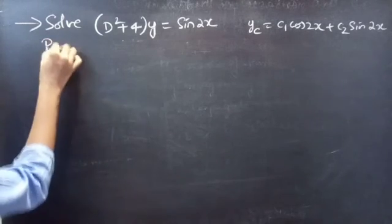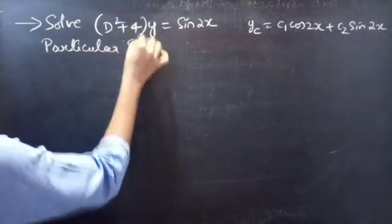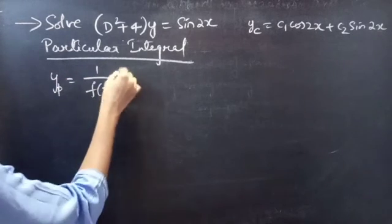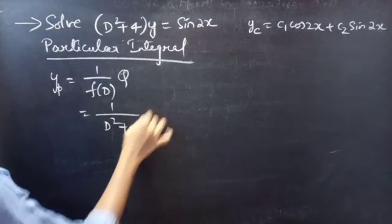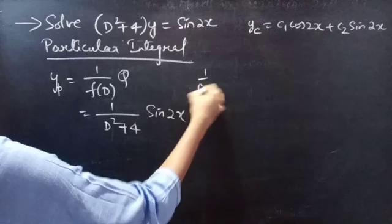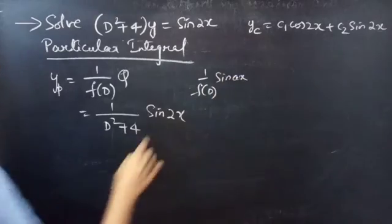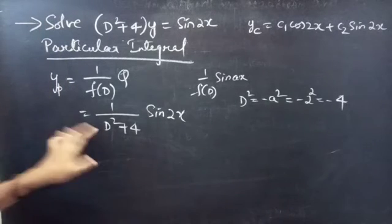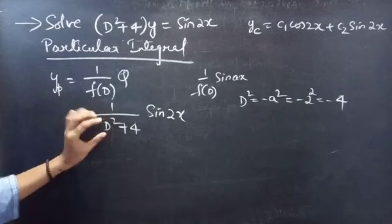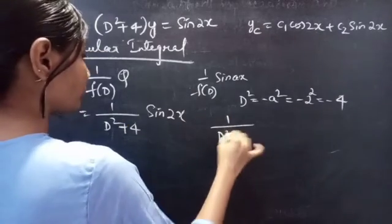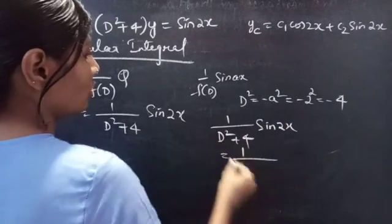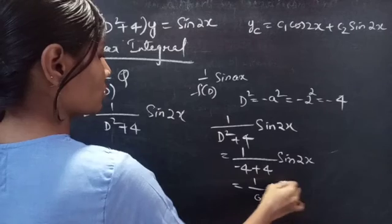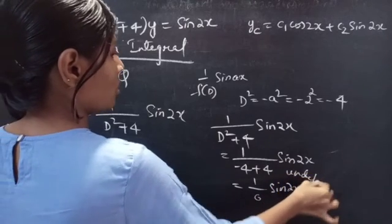Now let's find the particular integral. The particular integral is yp = 1/f(D) · Q = 1/(D² + 4) · sin 2x. This is of the form 1/f(D) · sin(ax). For a = 2, we replace D² with −a² = −4. Substituting: 1/(−4 + 4) · sin 2x = 1/0 · sin 2x, which is undefined, so we cannot use this direct formula.